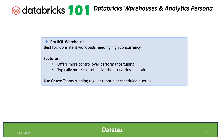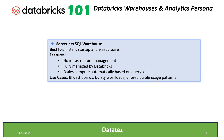We should pick the Pro SQL warehouse when we have consistent workloads requiring a bit of high concurrency — meaning a high number of parallel queries. There may be some fine-tuning needed for optimization. Teams running regular reports and scheduled queries can opt for Pro SQL warehouses.